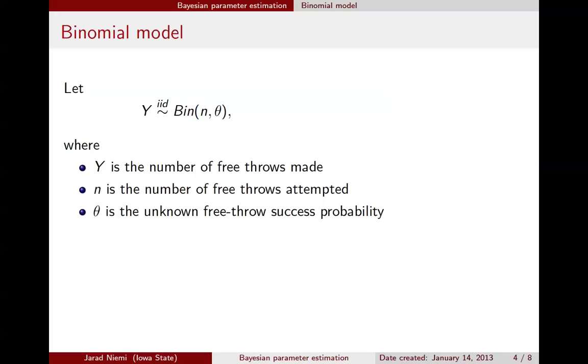All right, so writing this model down defines the probability mass function for the data that we're going to observe. In the notation on the previous slide, the previous two slides ago, this is p of y given theta, and here we just write down the binomial probability mass function: n choose y, theta to the y, 1 minus theta to the n minus y.